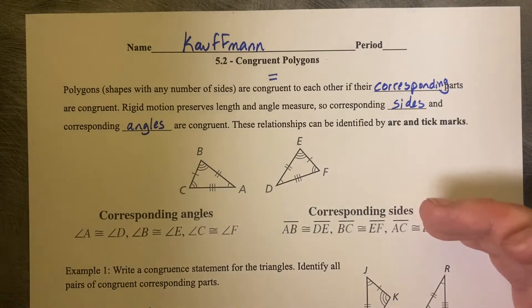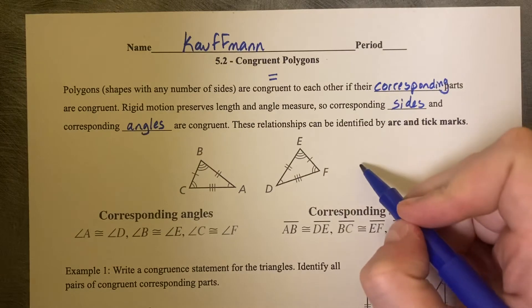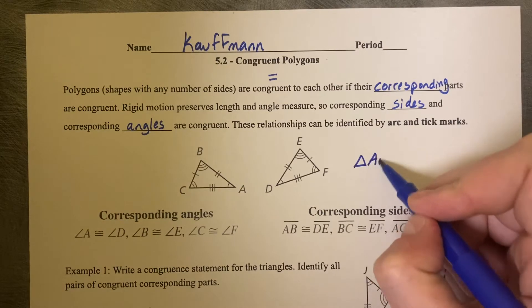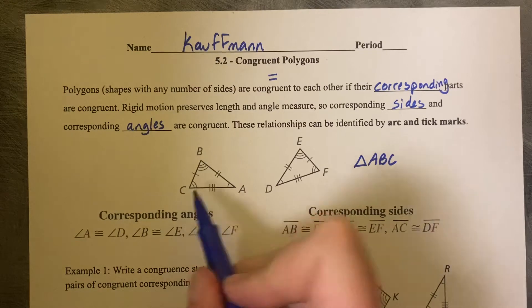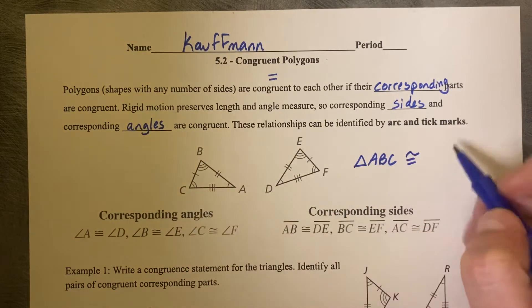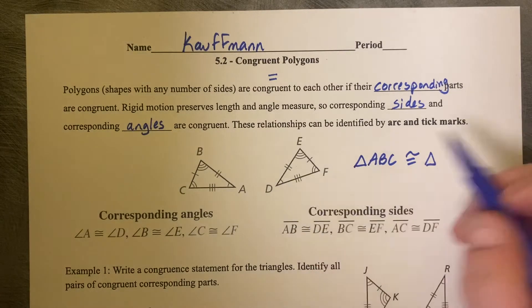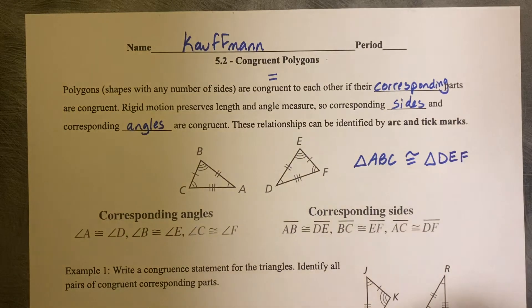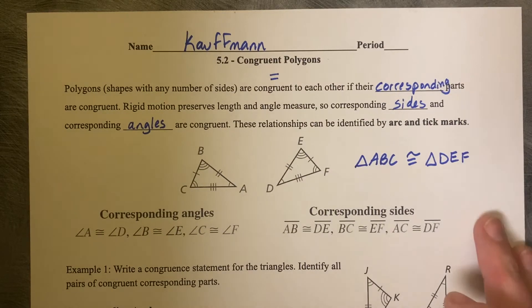So if you're going to write a congruence statement for these two triangles, you need to go in the same order when you write the triangle name. So if I say triangle ABC, so that's from one arc to three to two, I need to go in the same direction when I say it's congruent to the second triangle. So then I start at the one arc mark D, and then to E, and then F. Most of the time from textbooks, you'll get the letters in alphabetical order, but that will not always be true, just sometimes.